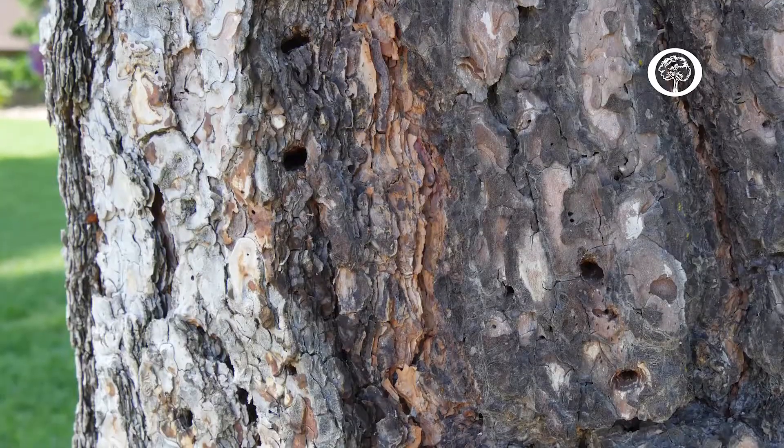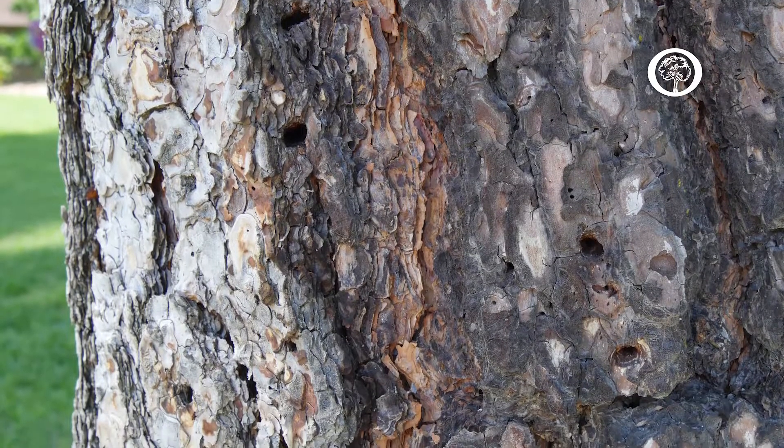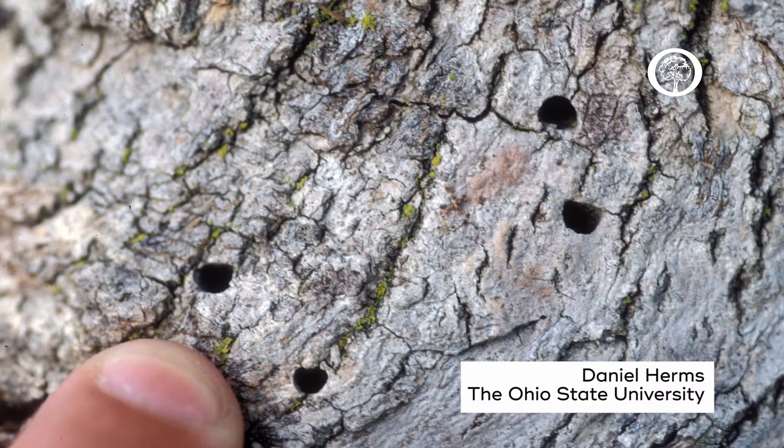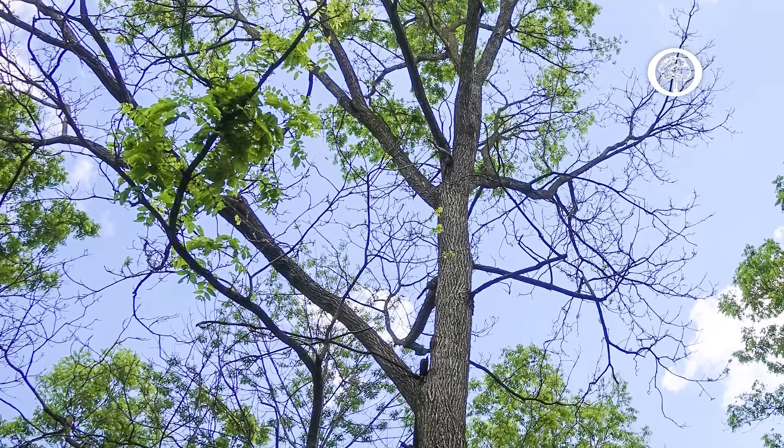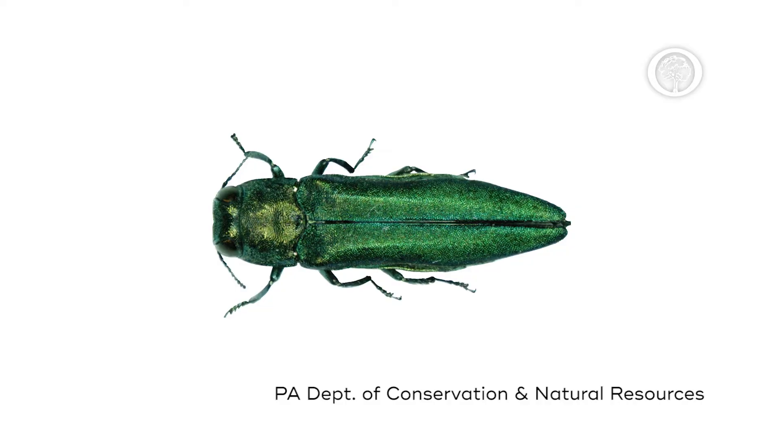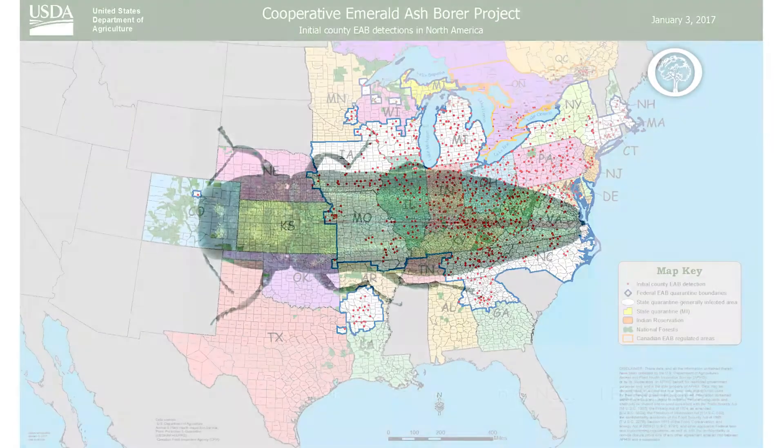Some insects attack species very specifically. If you have a pine tree in your landscape that shows evidence of little holes on the trunk and branches, that could be evidence of some sort of pine beetle attacking your tree — a very lethal pest. Similarly, if you've got exit holes from insects on an ash tree, that could be evidence of the emerald ash borer, another very lethal pest, depending on where you are in the country.